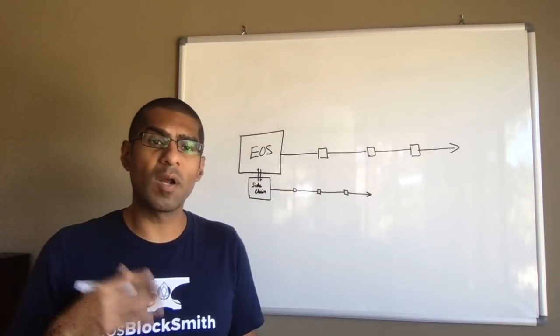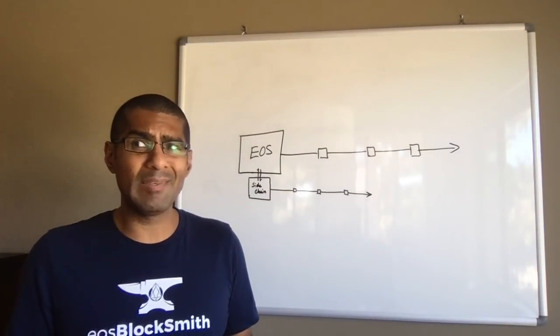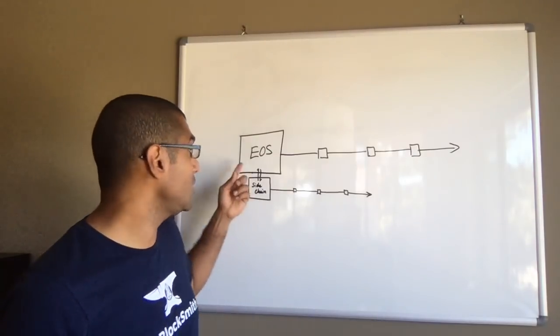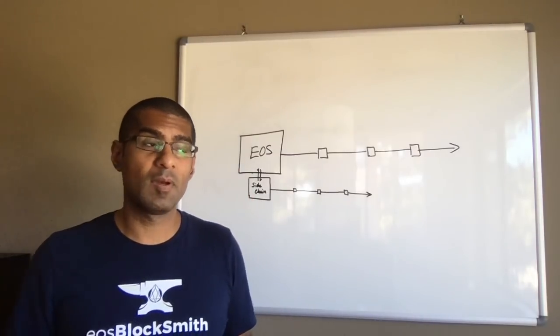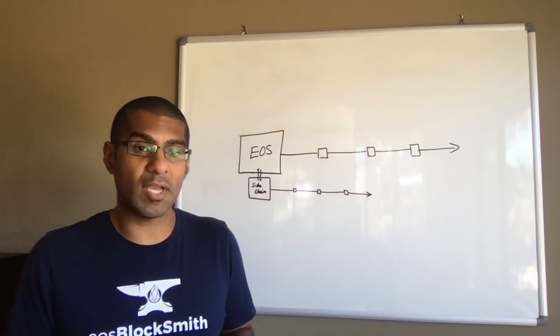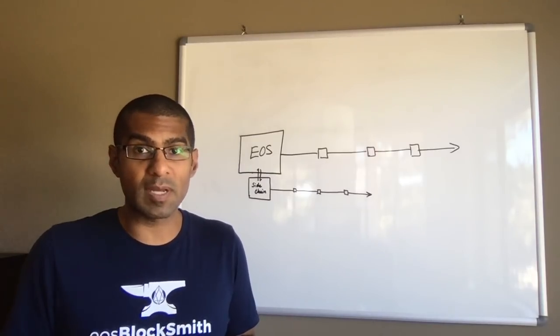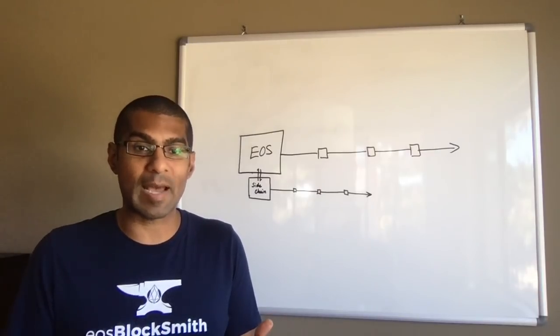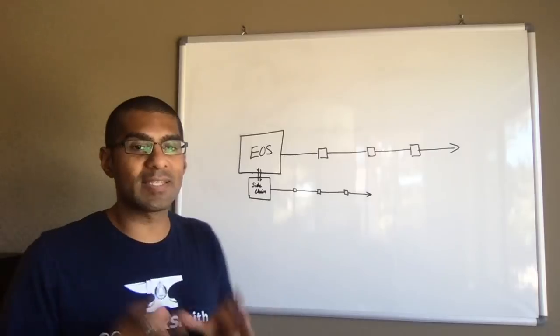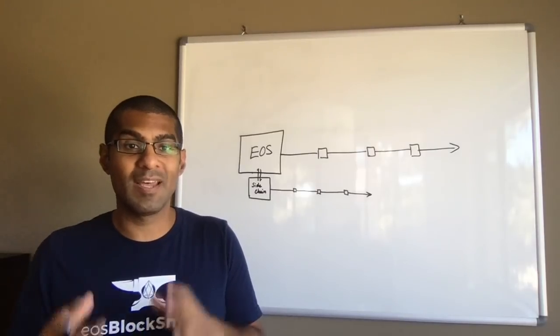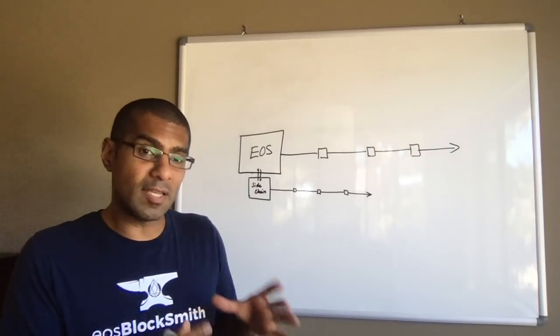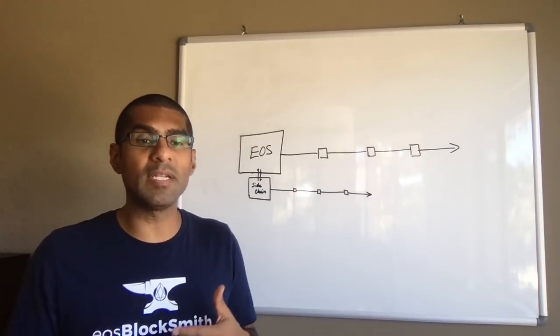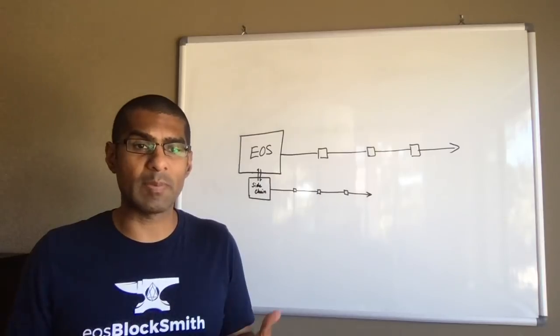Let's say you want to run a dApp that requires a lot of RAM and you don't have a ton of capital to buy all the RAM that you're going to need on the main chain to run that dApp. Well, if someone creates a sidechain where RAM is a lot cheaper and a lot more available, that might be the perfect place for you to run that dApp. Sidechains are going to create these side ecosystems that are tethered to the main EOS network, but might have certain properties that make it more appealing for dApps or other applications.